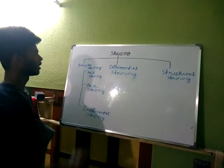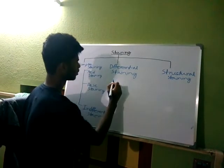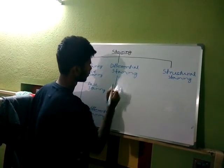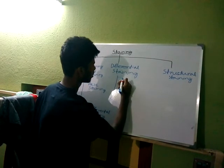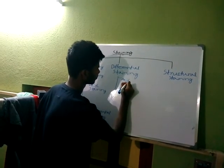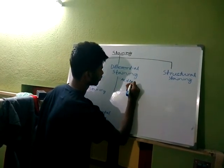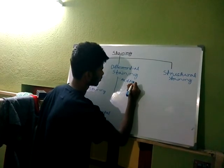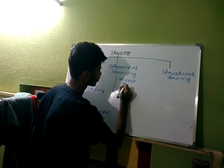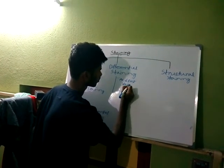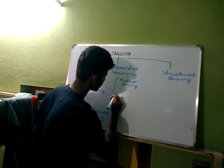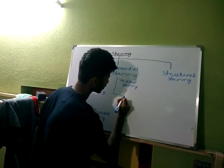Differential staining is two types: one, acid fast staining; and the other is gram staining.